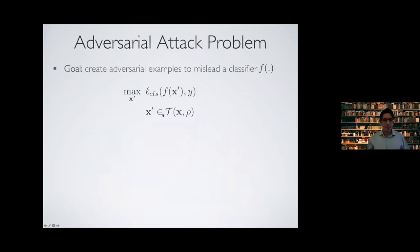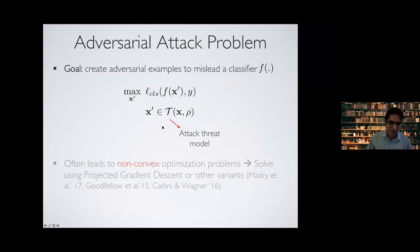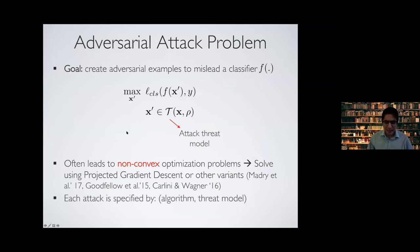In the adversarial attack problem, the goal is to create adversarial examples to mislead the classifier using the following optimization. We are maximizing over X' a classification loss at that point, given that X' is within a particular threat model. Having this constraint that X' lies in this particular threat model will ensure that humans would classify X and X' the same way, so we get around the problem of not having a good mathematical characterization of human perception. This optimization often leads to non-convex optimization, solved approximately using projected gradient descent or other local search methods. Each attack is specified by the attack algorithm and the threat model considered as the constraint.